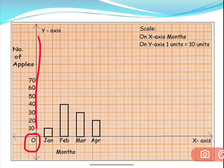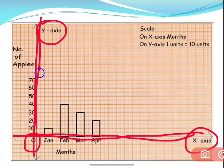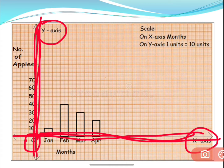Now coming to naming the lines. The sleeping line is called as x-axis and the standing line is called as y-axis. You have to draw one sleeping line and one standing line, and they should meet at a point which is the origin. The sleeping line is called as x-axis and the standing line is called as y-axis.